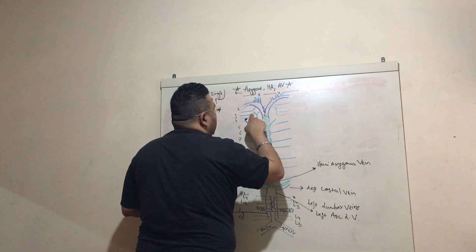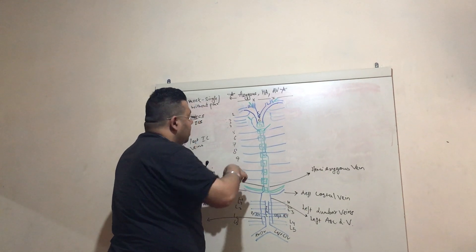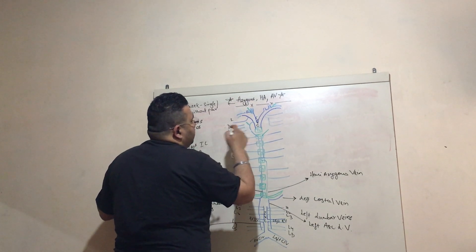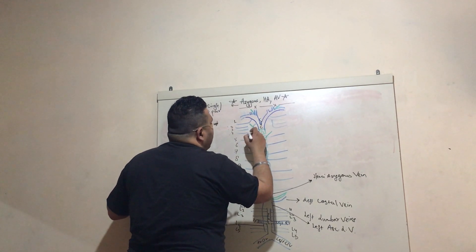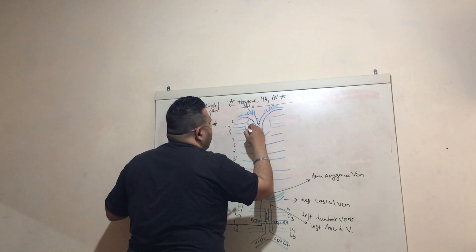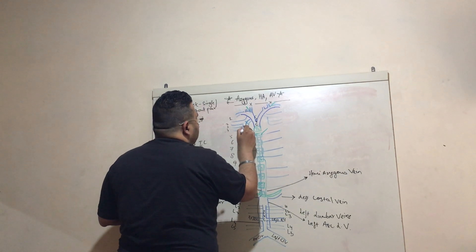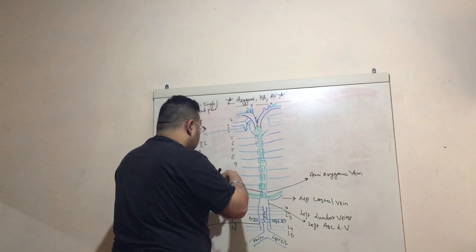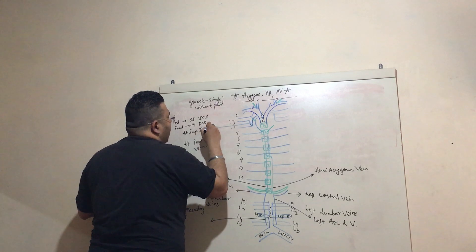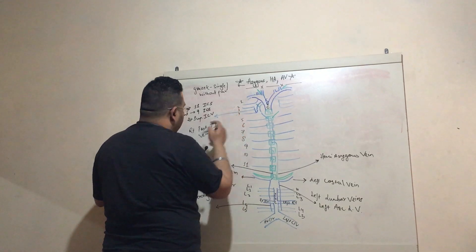The 2nd, 3rd, and 4th right posterior intercostal spaces drain into a single structure, which then drains directly into the superior vena cava. This structure is known as the right superior intercostal vein.